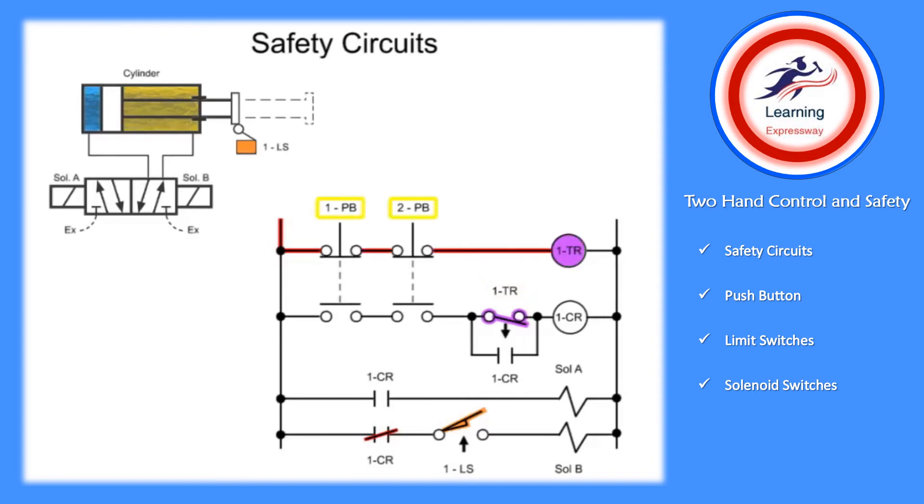Only when an operator depresses both buttons within the off-delay timer countdown period can power flow to the 1CR contact relay and energize the bypass circuit. The timing relay will remain closed until its countdown completes, usually just a fraction of a second. After the allotted time, the normally open-timed open-timer contact swings open.